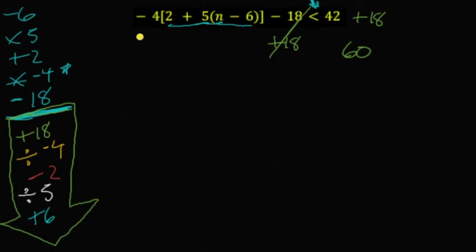Divide by negative 4 gets rid of a times negative 4. Divide by negative 4 gives us a negative 15. And because we're dividing both sides by a negative number, we're flipping the direction of the inequality.